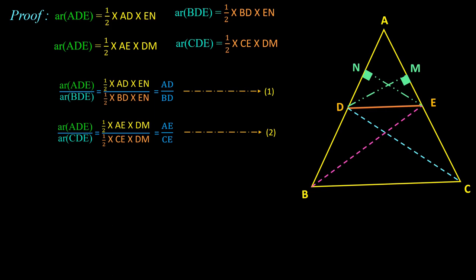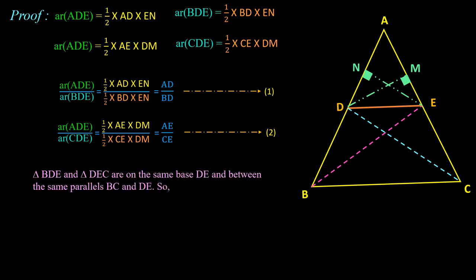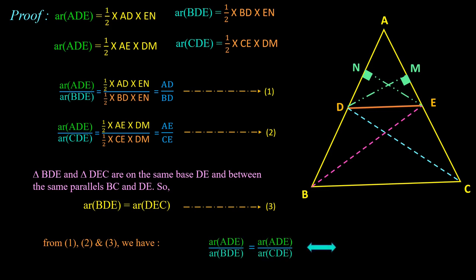To equate the right-hand sides, AD/BD = AE/CE, we need to equate the left-hand sides. In both equations the numerator is the area of triangle ADE. If the denominators are equal, the equations are equal. We recall that area of triangle BDE equals area of triangle DEC, since they lie between the same parallel lines with the same base DE. Substituting this (Equation 3), from Equations 1, 2, and 3, the ratio AD/BD equals AE/CE. Hence proved.